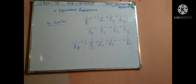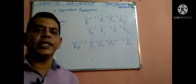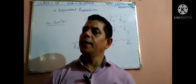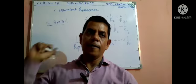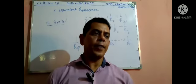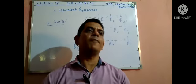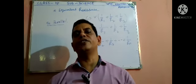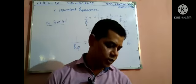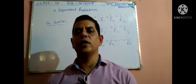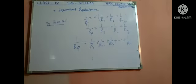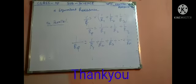So, equivalent resistance in series and equivalent resistance in parallel — draw the circuit and define the formula of these types, and solve the numerical problems of this process. Okay, thank you.